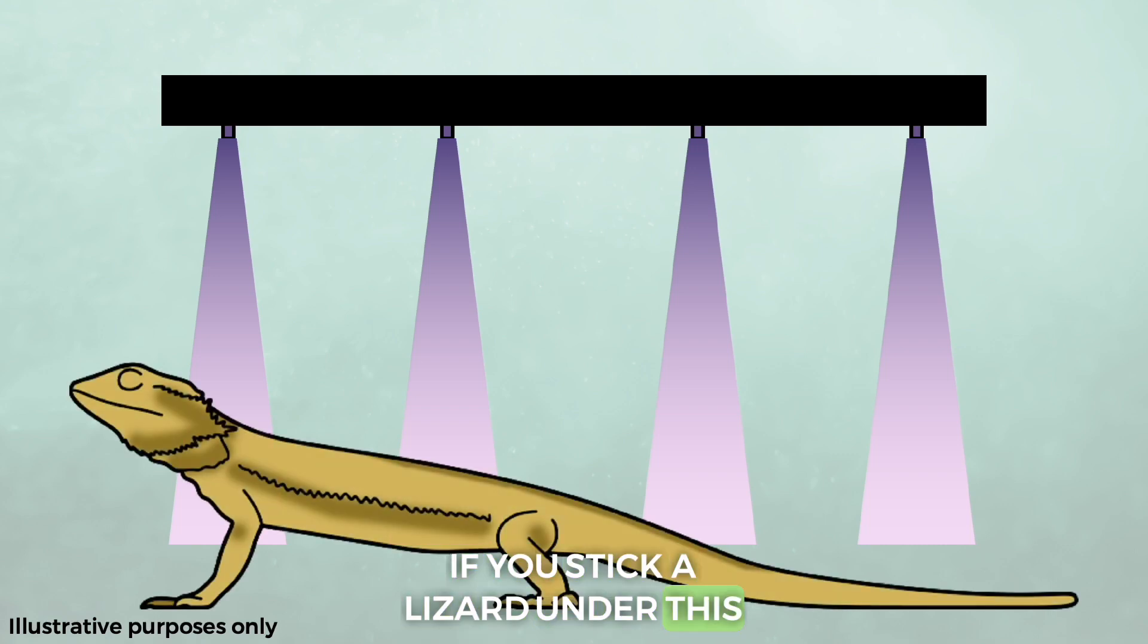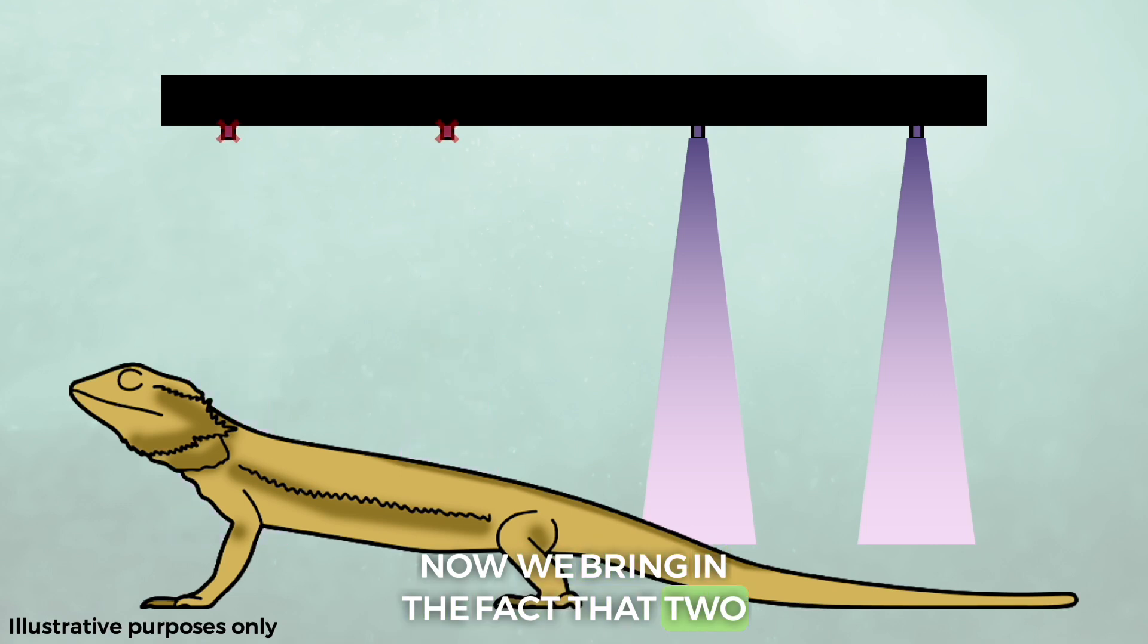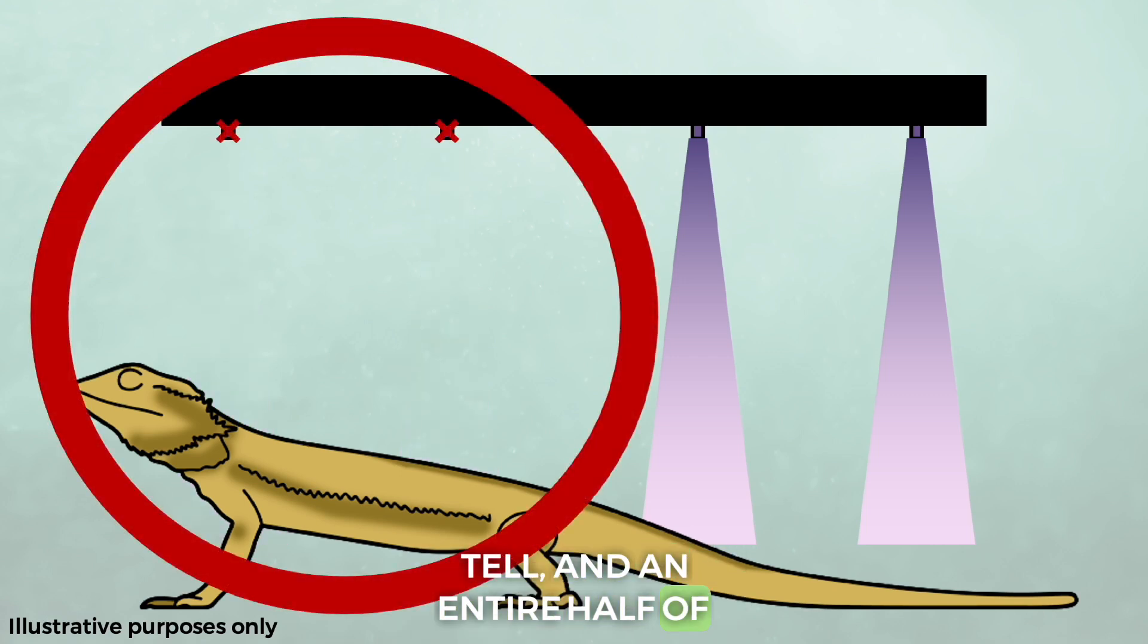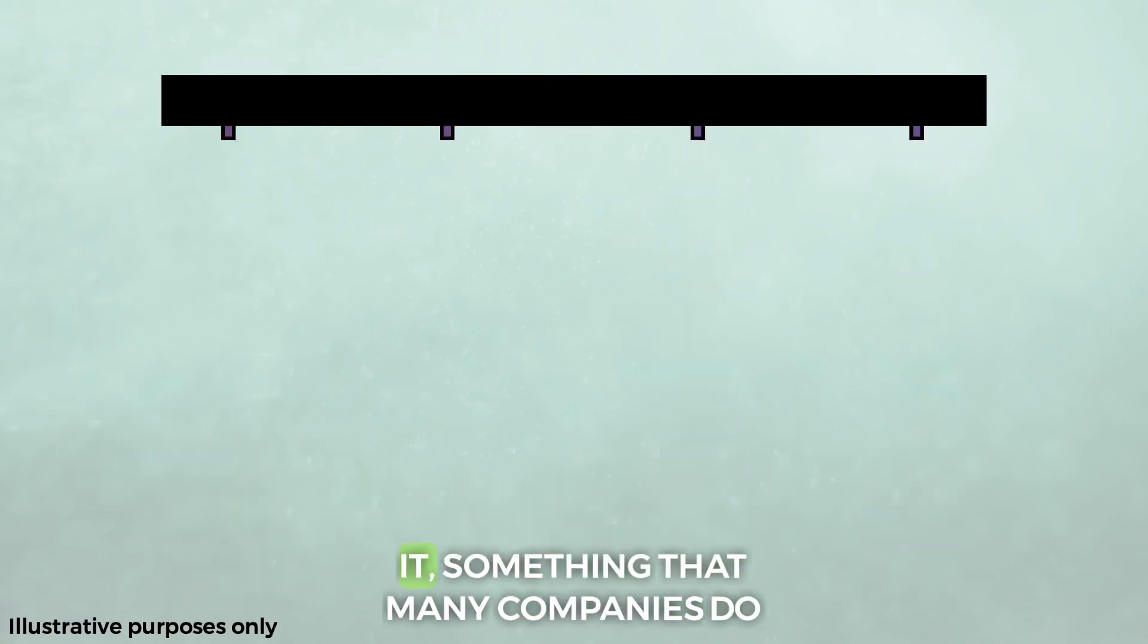The beams of UV from the different diodes don't really overlap. If you stick a lizard under this lamp, you'd end up with a patchy exposure to UV. Now we bring in the fact that two of the diodes could fail without the user being able to tell, and an entire half of the lamp would be totally unsuitable for UVB. This is obviously a problem, but there are ways to address it.